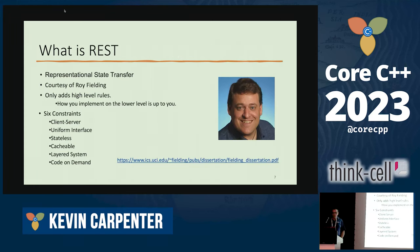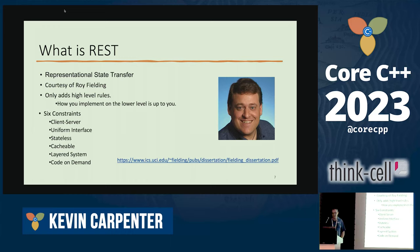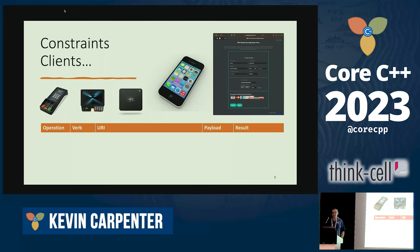REST is Representational State Transfer. Roy Fielding wrote about it in his dissertation — there's a lot more to it than just REST, but that's one of the main things. A REST interface has six constraints: client-server, uniform interface, stateless, cacheable, layered system, and code on demand. Code on demand is the optional one.